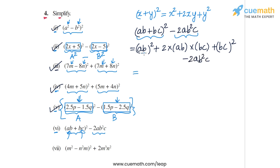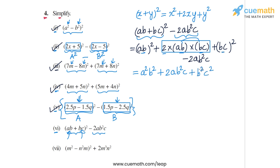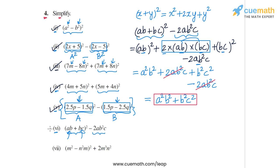Expanding (ab+bc)²: (ab)² + 2×ab×bc + (bc)² = a²b² + 2ab²c + b²c². Subtracting 2ab²c: a²b² + 2ab²c + b²c² - 2ab²c. The +2ab²c and -2ab²c cancel, leaving a²b² + b²c².